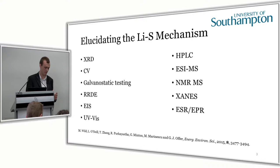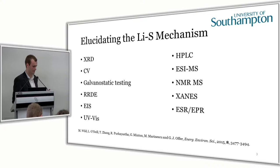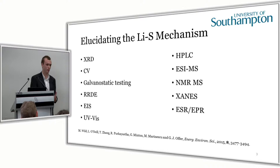There's a lot of work in the literature on trying to identify the polysulfide species and elucidate the mechanism, using a variety of different techniques. As Gregory mentioned yesterday, there's quite a variety of different polysulfide species and mechanisms that have been identified. I think the main reason for this is that these polysulfide species and the mechanism are very susceptible to the conditions of the cell — depending on which electrolyte you use, the polysulfide species will change completely, and depending on the cell components and cathode.